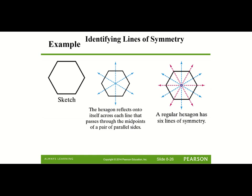Here you can see all the lines of symmetry for the hexagon. One way to find a line of symmetry is to go through the center of one side to the center of the opposite side — with six sides, that gives three lines. Going from vertex to opposite vertex also gives three more lines. So a regular hexagon, which is a six-sided figure, has six lines of symmetry total.